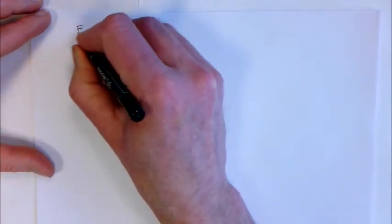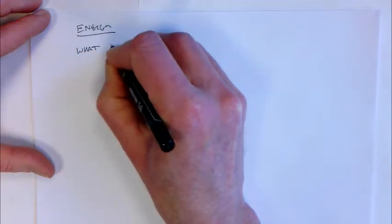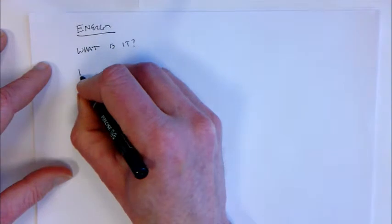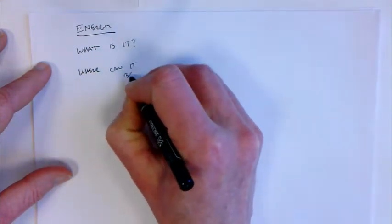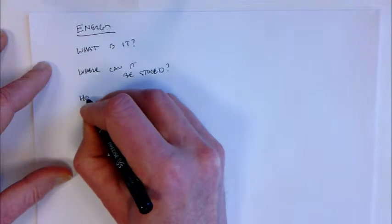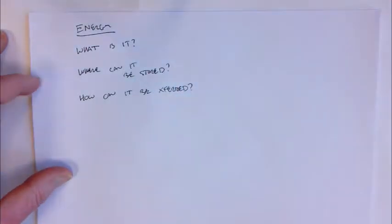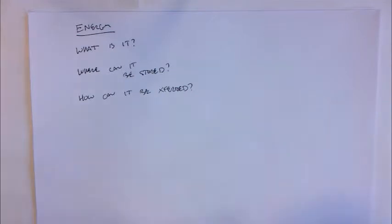So we just did a sort of high-level overview of this module. Let's continue in the overview mode but get a little bit more into detail. This module is focusing on energy, and in this video we'll talk about three questions with regard to energy: what is it — including how we think about energy, its characteristics, and its units — where can you store it, and how can it be transferred. We'll deal with all three of these questions in more detail subsequently.